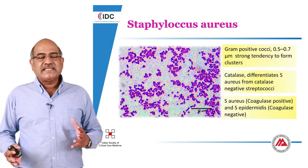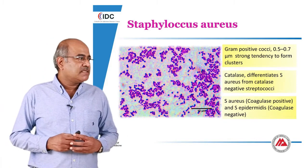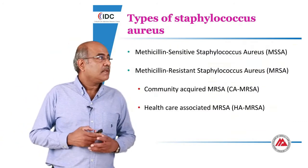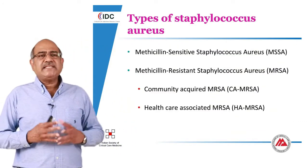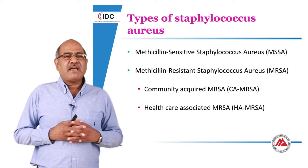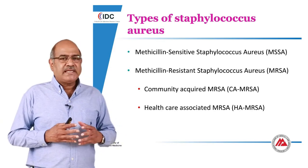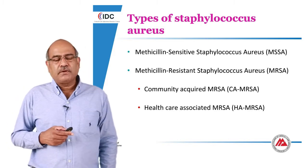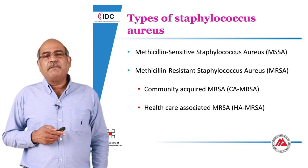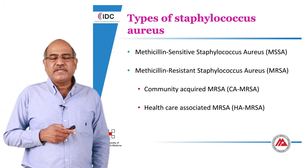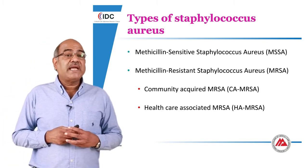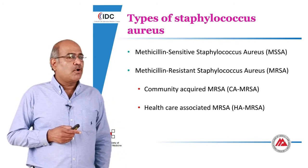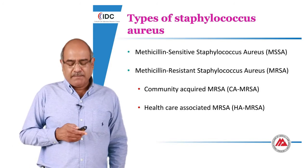The coagulase negative and coagulase positive differentiates between Staph epidermidis and Staph aureus. In Staph aureus we look at two different types: one is the Methicillin sensitive Staphylococcus aureus, and the other is the Methicillin resistant Staph aureus, which has two types — the community acquired MRSA and the healthcare associated MRSA.